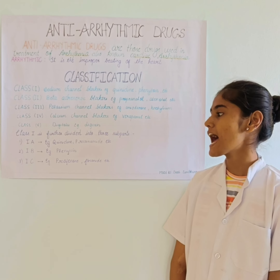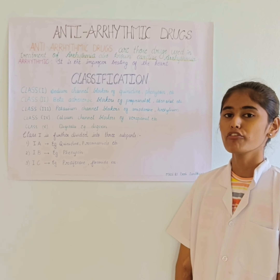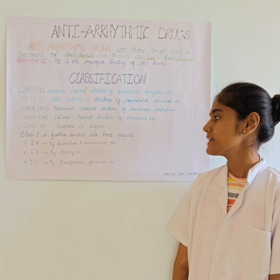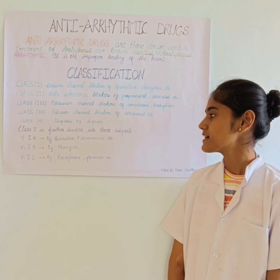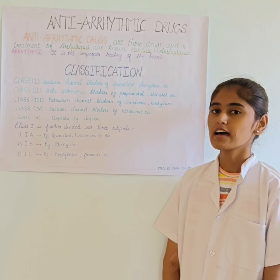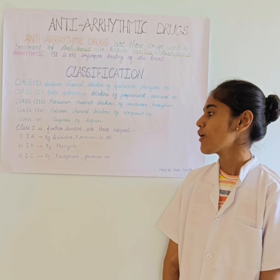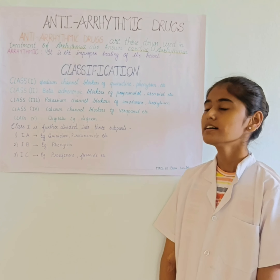Class 1 is further divided into subclasses Ia, Ib, and Ic. The example of Ia is punidine, the example of Ib is phenotoy, and the example of Ic is propanol.